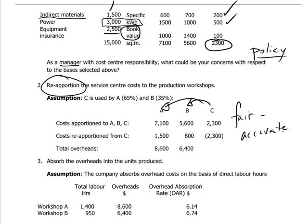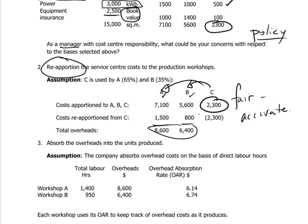Assuming we found a reasonable way to transfer the $2,300 between A and B — A taking $1,500 and B getting $800 re-apportioned to it — the total overheads are now located between production departments A and B. Those are the departments through which units of product are traveling. Now we have to do the next step: absorption. There are a lot of A's here — allocation, apportionment, re-apportionment, absorption. We have to absorb these overhead costs into the units that are produced.